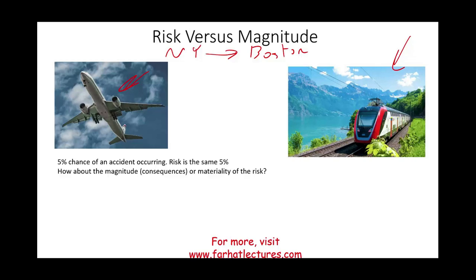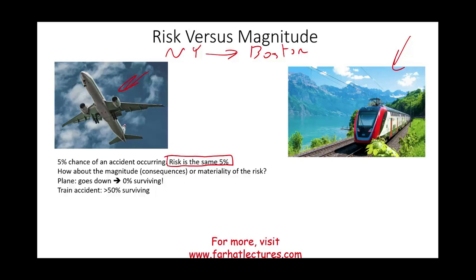How about the consequences, or the magnitude — the materiality — of that risk? If an accident happens on a plane, using extreme numbers to make the point, there's a 0% chance of surviving. So the consequences are great. If a train accident occurred, we'll assume there's more than a 50% chance of surviving. So notice: the risk is the same, but the materiality — the magnitude, the consequences — is not. The plane has the same risk but higher magnitude, higher materiality of the risk.